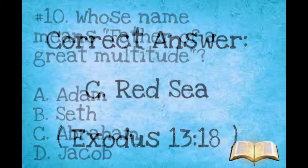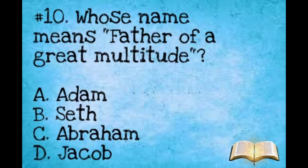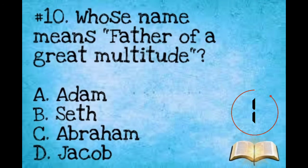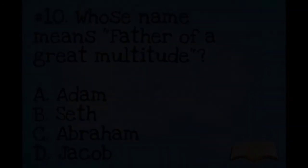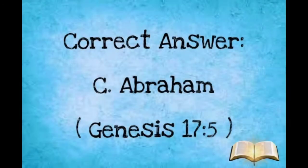Last question for the Easy Round: Whose name means Father of Great Multitude? A: Adam. B: Seth. C: Abraham. D: Jacob. The correct answer is C, Abraham.